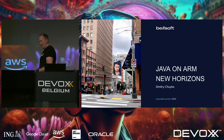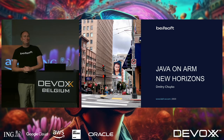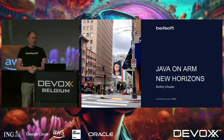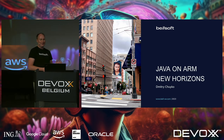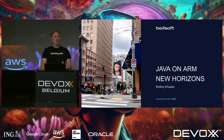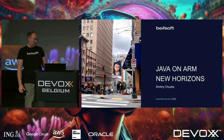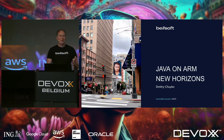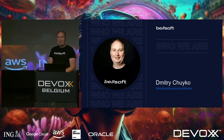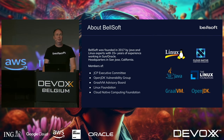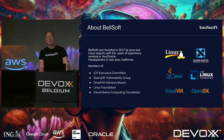My name is Dmitry Chuyko, and we are going to talk about some Java on some ARM. It seems to be treated as a new topic or something unusual, but ARM devices are very common now — we all have ARM devices in our pockets. I participate in OpenJDK development as an OpenJDK committer, and I work at a company named BellSoft, which is among the top companies contributing to OpenJDK.